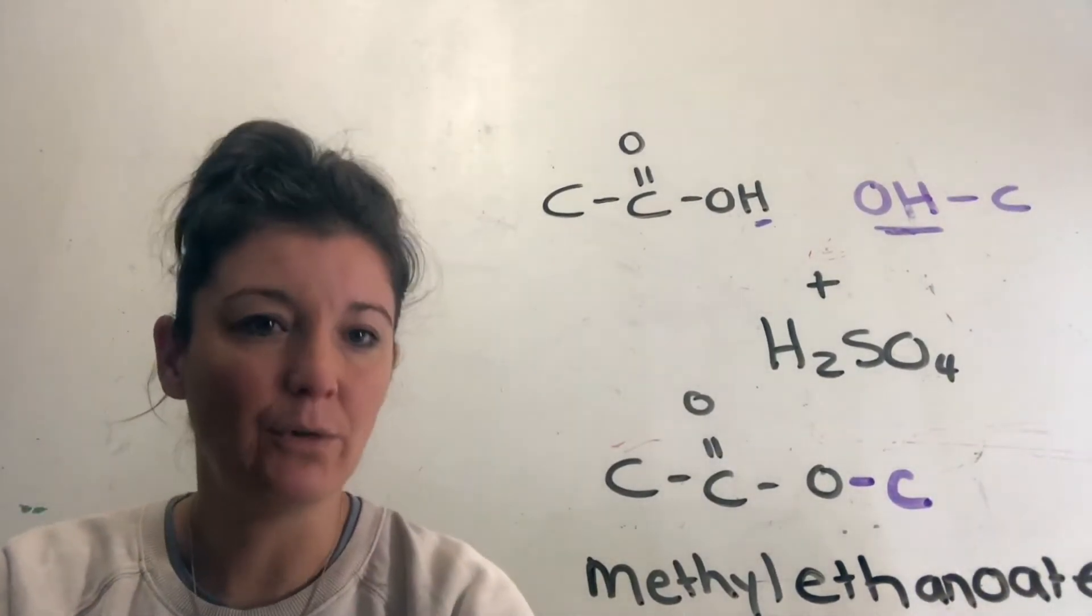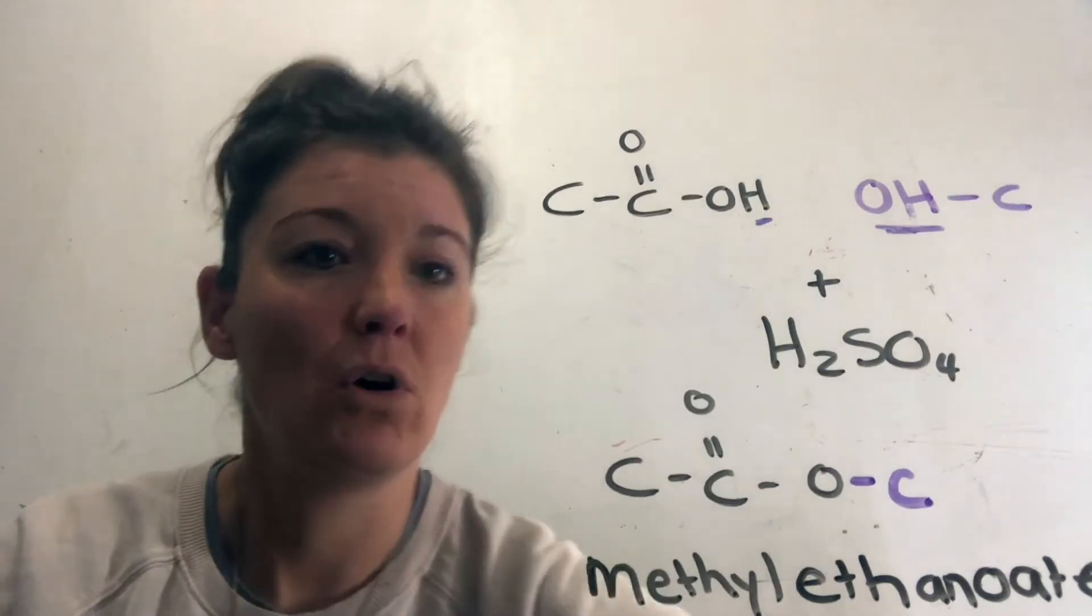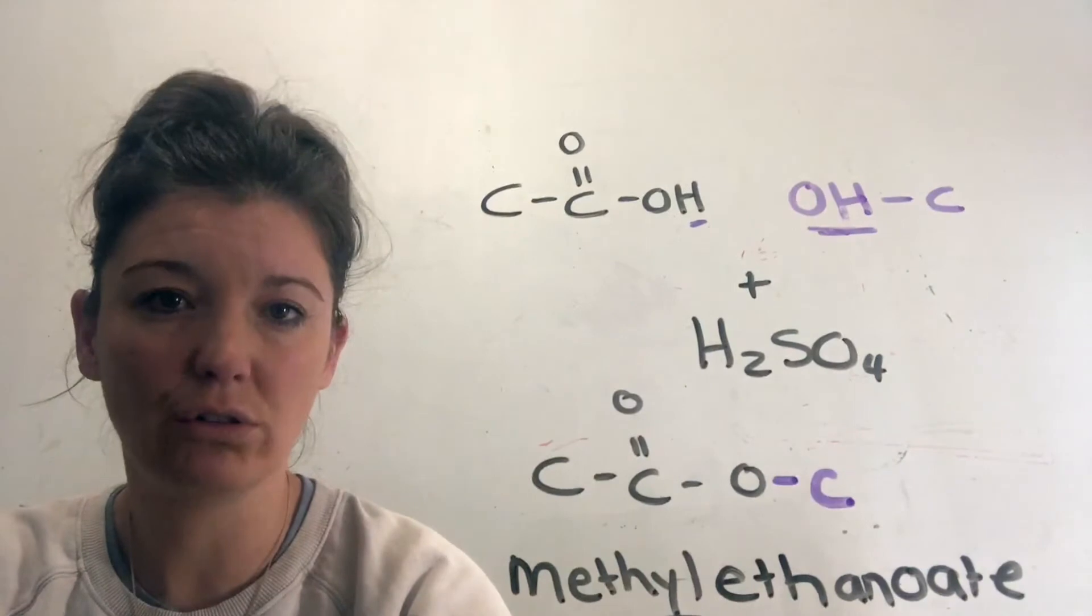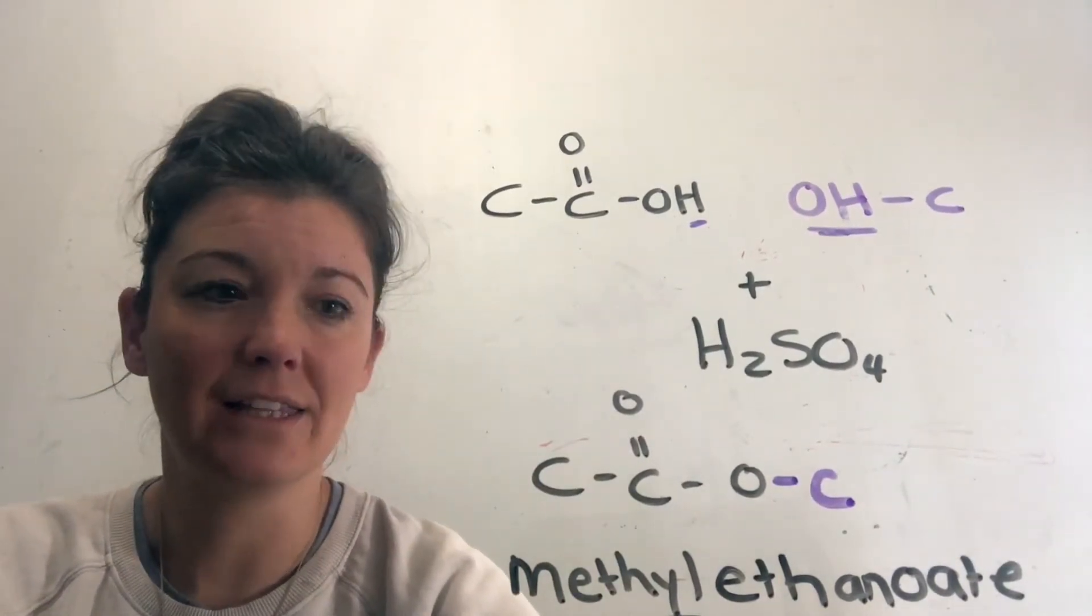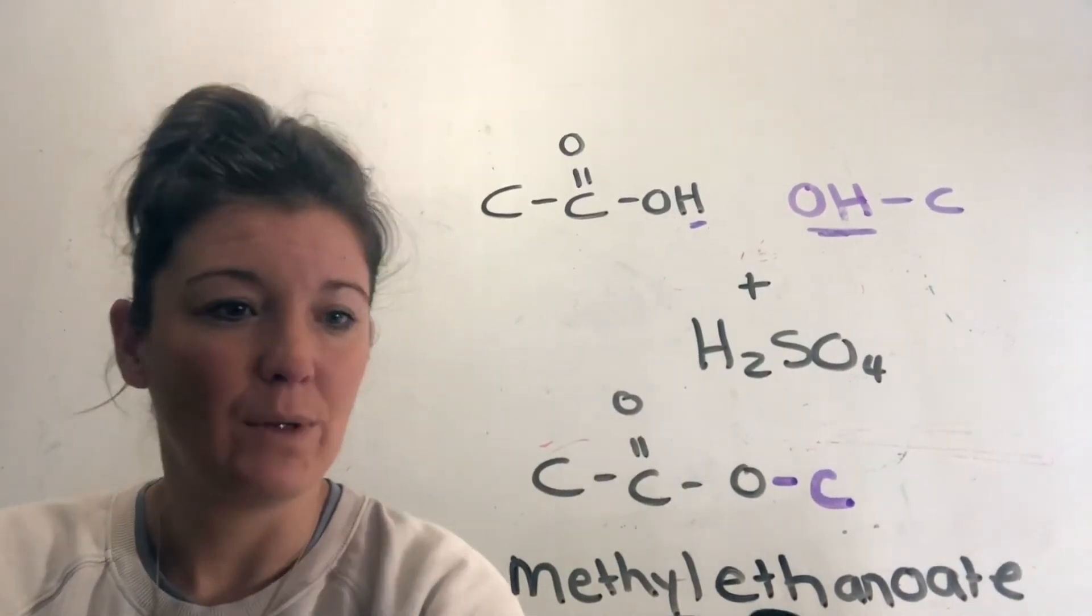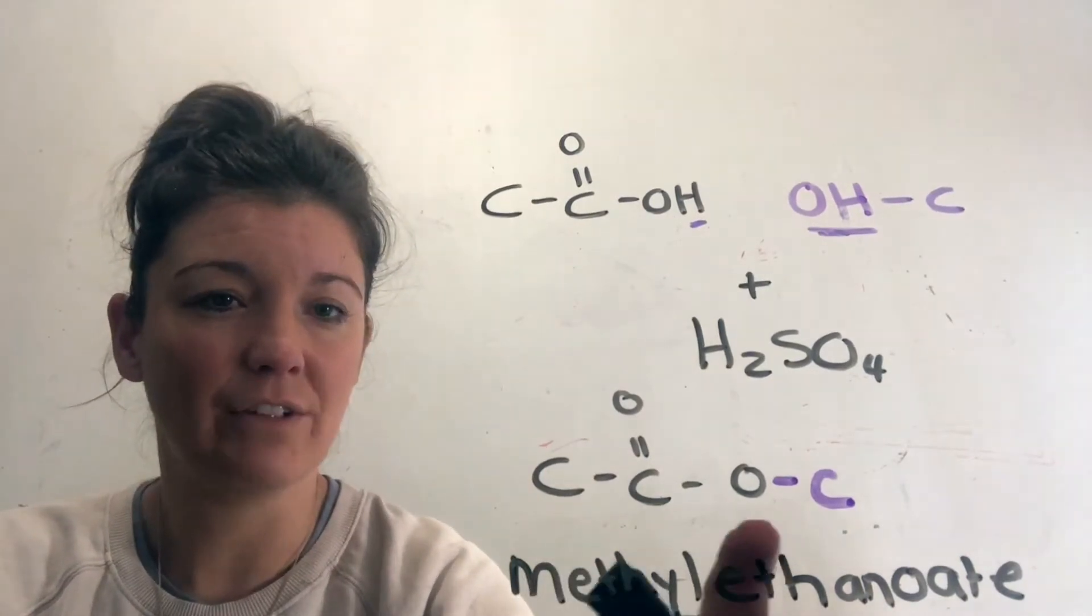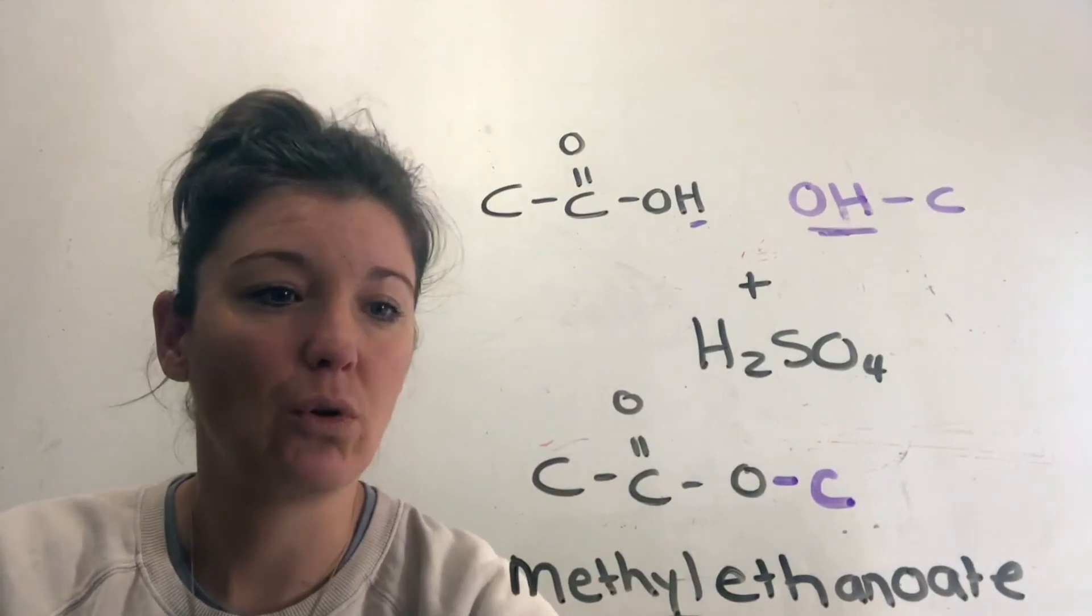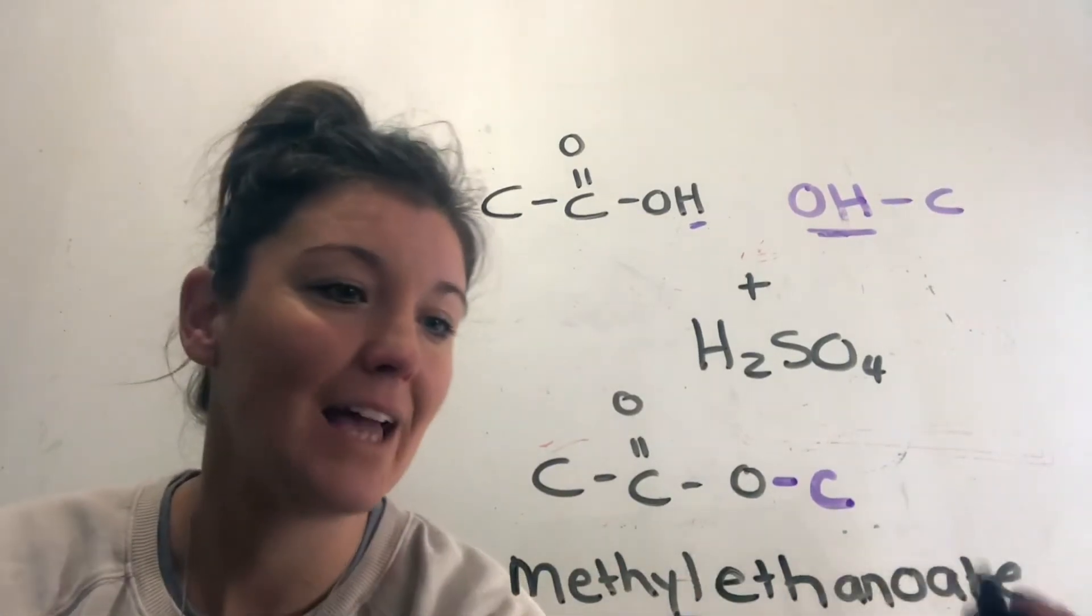So methyl ethanoate is the name of this ester because it's made up of a methanol and it's made up of an ethanoic acid, and when we combine them together because they have an ester bond, the linkage between them, they become an ester, so we call it methyl ethanoate.